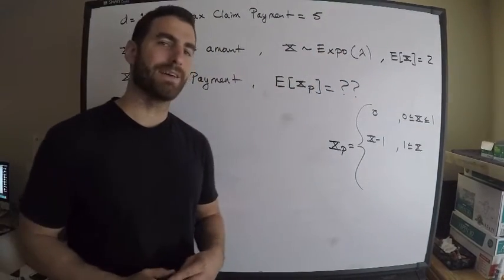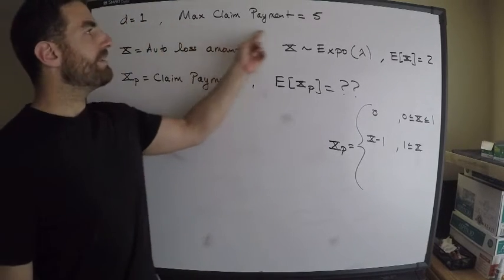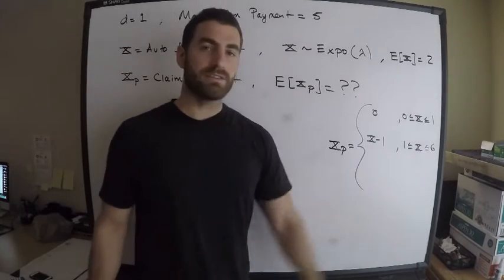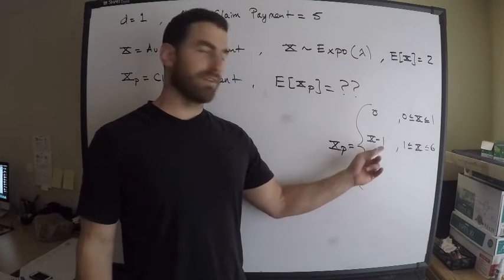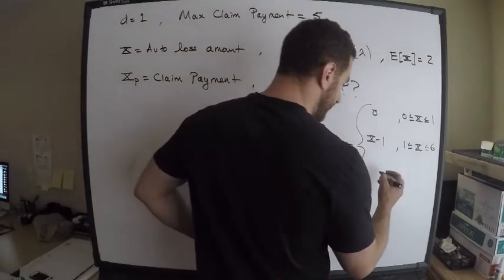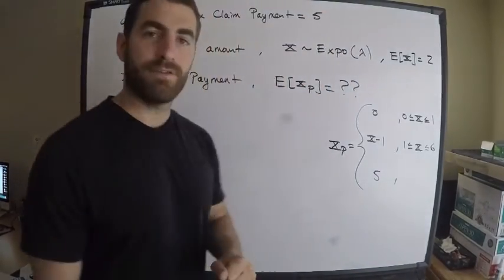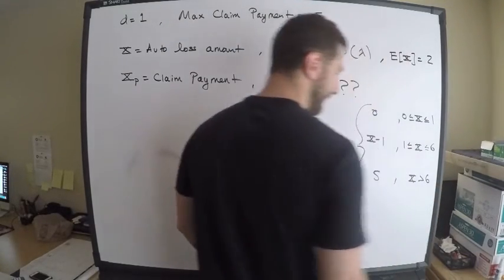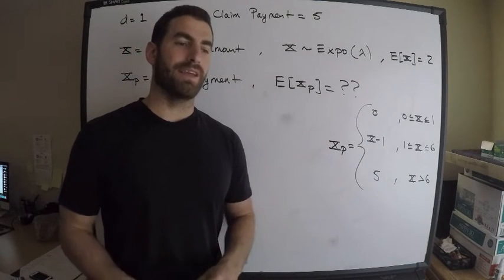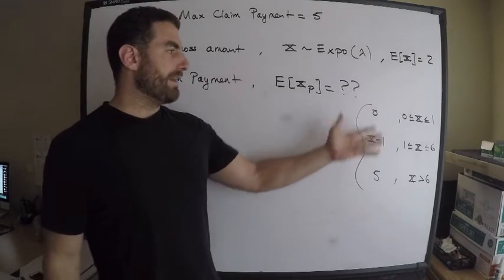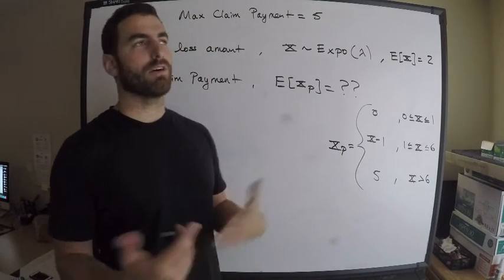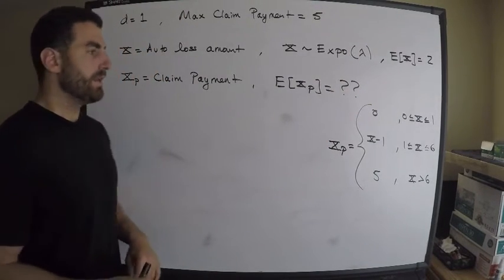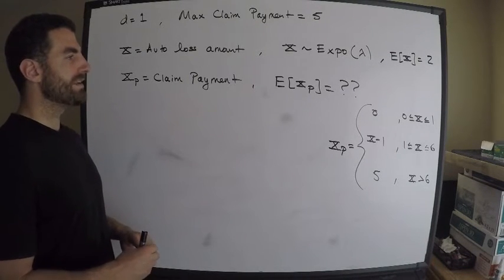Be careful: what is the maximum loss for the X minus one case? Our max payment is five, so this applies when the loss is less than or equal to six — because if the loss is six, the payment is six minus one which equals five. Then the insurance company pays exactly five when the auto loss exceeds six. Since the losses follow a continuous exponential distribution, the boundary inequalities don't materially affect the calculation.